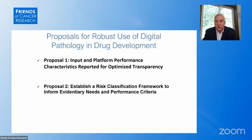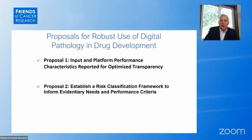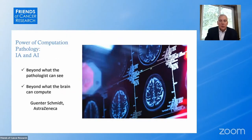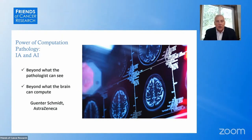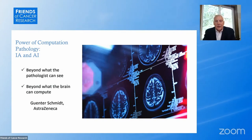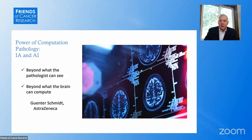The second proposal is to provide a risk classification framework for the evidence needed for performance characteristics based upon the intended use. To close, a quote from Gunther Schmidt, the AI expert at AstraZeneca, on companion pathology — a combination of image analysis and AI: 'It's beyond what the pathologist can see and beyond what the brain can compute.' I think that summarizes it very well.